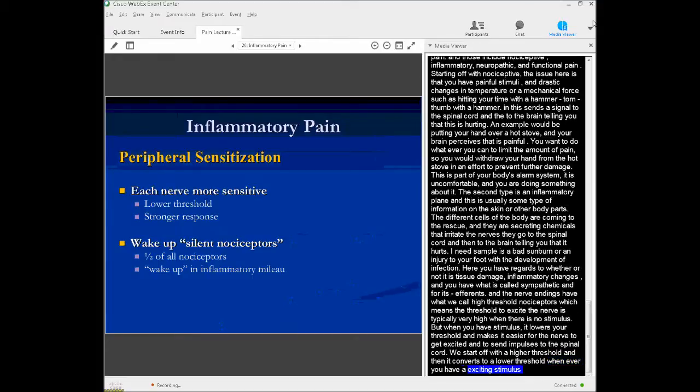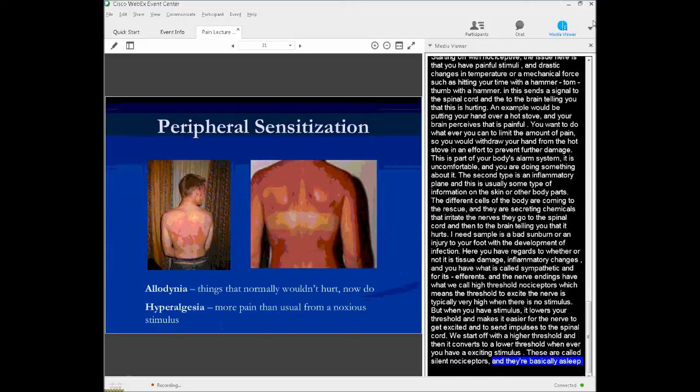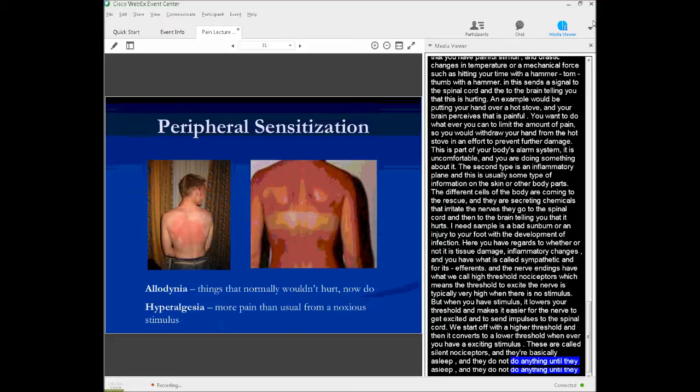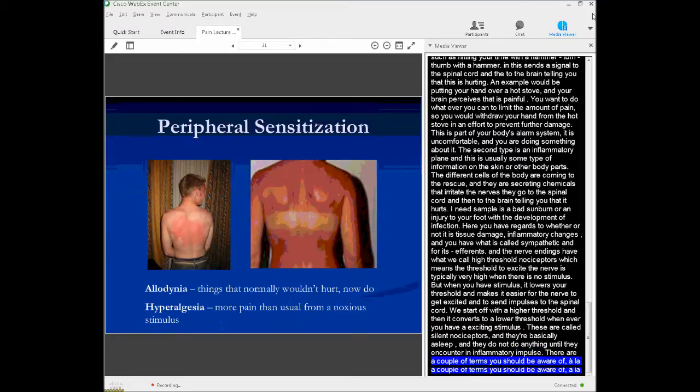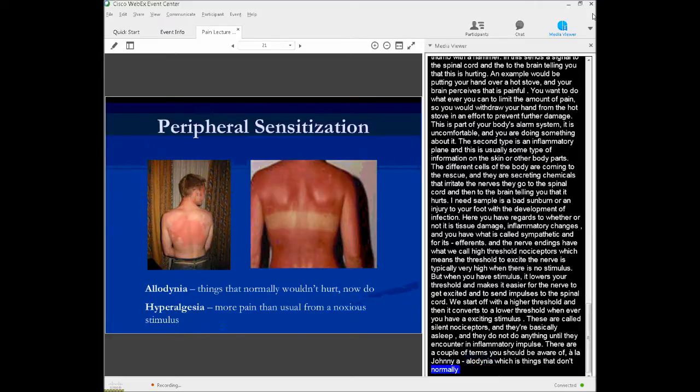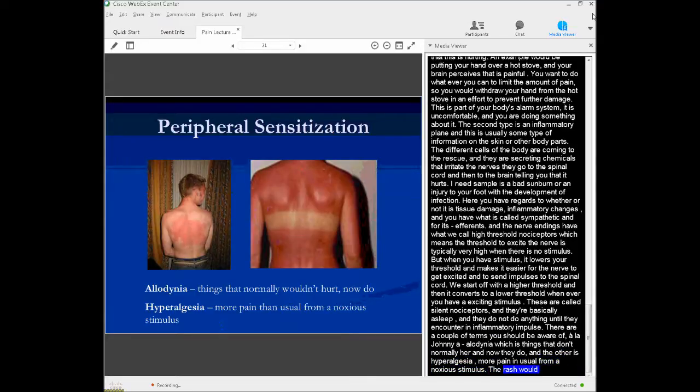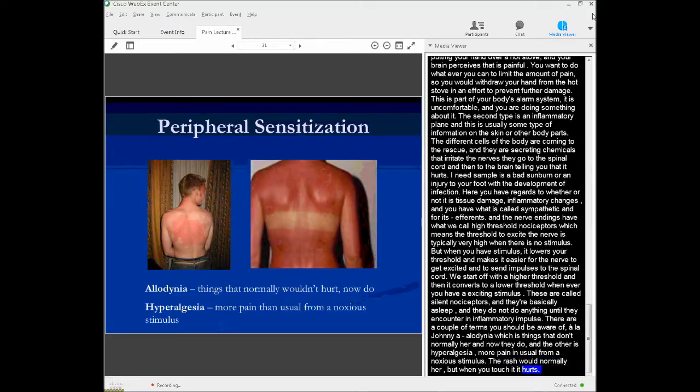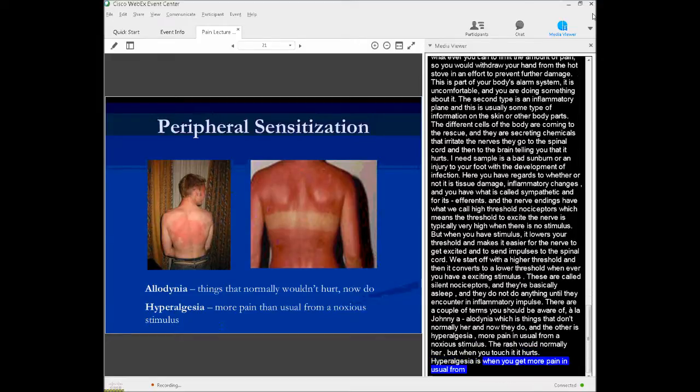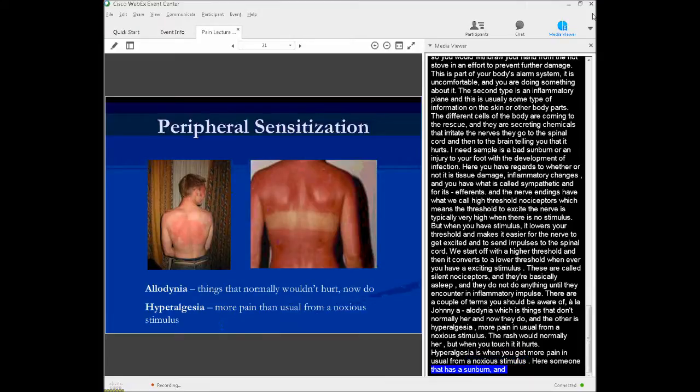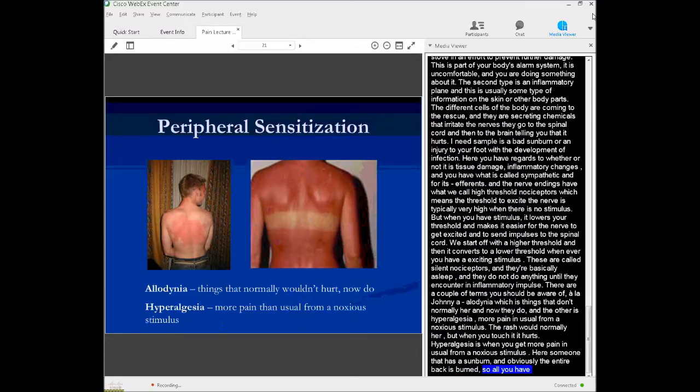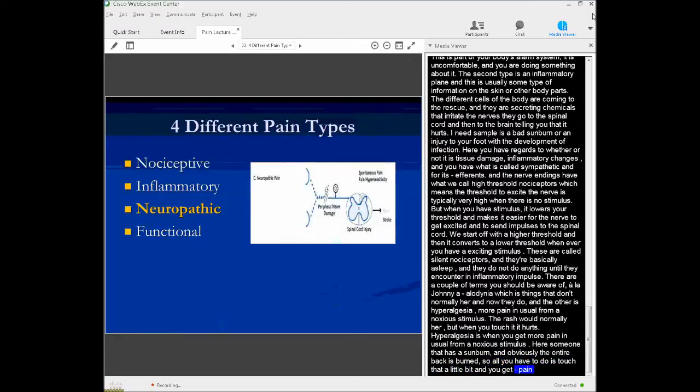And then there's a couple of terms you should be aware of. Allodynia, which means that things that normally wouldn't hurt now do. And there's hyperalgesia, which means more pain than usual from a noxious stimulus. So the picture on the left there, you have somebody with a rash, and normally the skin of your back wouldn't hurt. But when you touch the rash, it does. So that's allodynia. Hyperalgesia is when you get more pain than usual for a noxious stimulus. So here's somebody who's had a sunburn, and obviously the entire back is burned, and so all you've got to do is just touch that a little bit, and you get pain, whereas if they didn't have the sunburn and you touched them, they wouldn't get any pain at all. So that's hyperalgesia - more pain than usual from something that could cause pain.